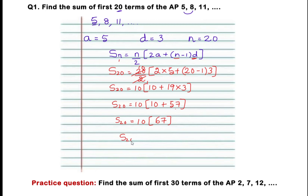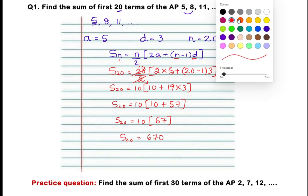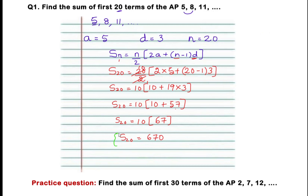S20 equals 10 times 67 which is 670. Therefore, the sum of first 20 terms of the given AP 5, 8, 11 is 670.